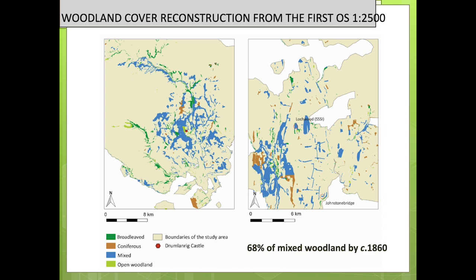The first OS survey also provides information: the 25-inch to the mile and the 6-inch to the mile editions make a distinction within the same wood about different stands — some are mixed woodlands, some coniferous, some broadleaved. The 25-inch don't cover the whole study area, but where they do, I vectorized the woodland and captured the information about woodland type. We found, for instance, that about 68% of the woodlands by 1860 in Drumlanrig Estate are mixed woodland.